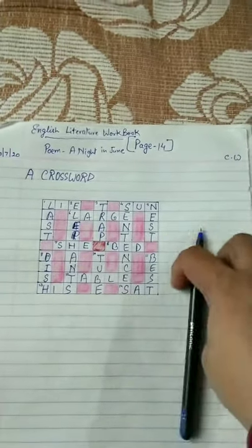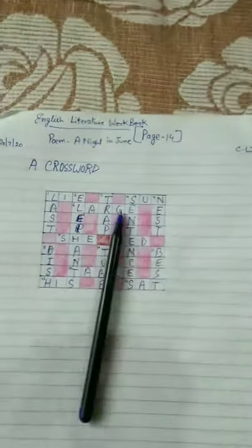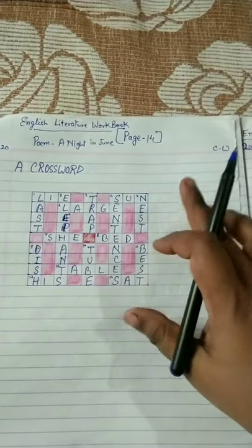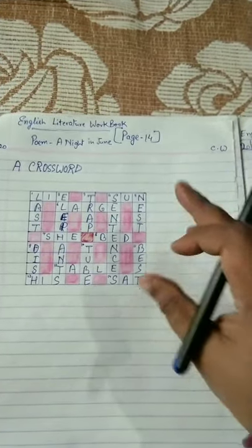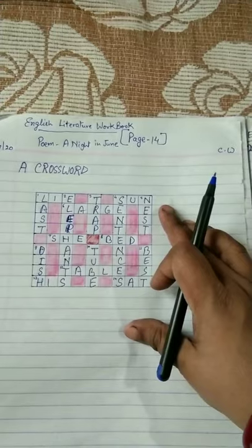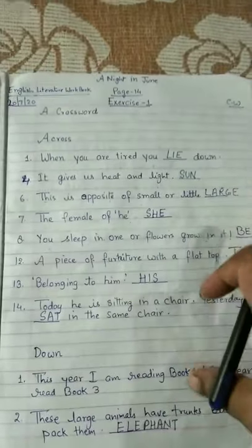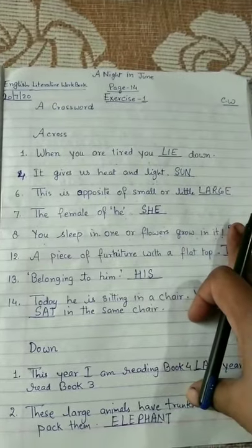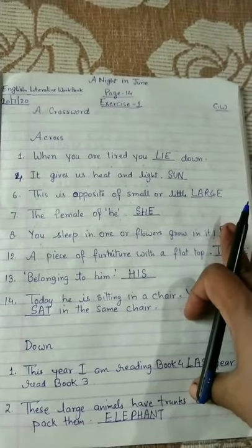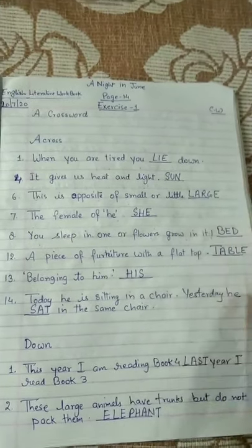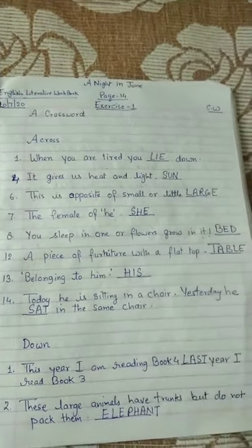So what you all have to do: complete it in your book with the help of pencil only. This is the work of your workbook — fill this crossword and complete the exercise with the help of pencil like this. Complete it in neat and clean handwriting and spelling should be correct. And your homework: revise this exercise. Okay, thank you.